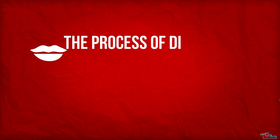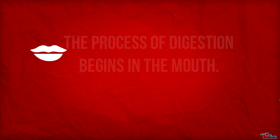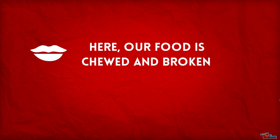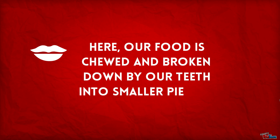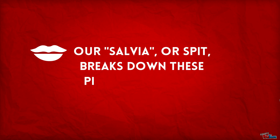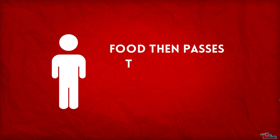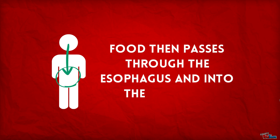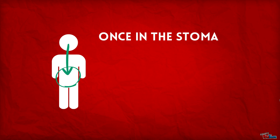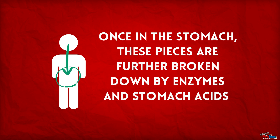The process of digestion begins in the mouth, where food is chewed and broken down by our teeth into smaller pieces. Our saliva, or spit, breaks down these pieces chemically. Food then passes through the esophagus and into the stomach. Once in the stomach, these pieces are further broken down by enzymes and stomach acids.